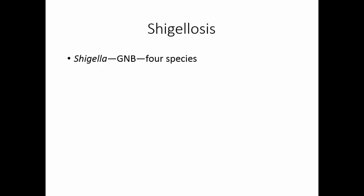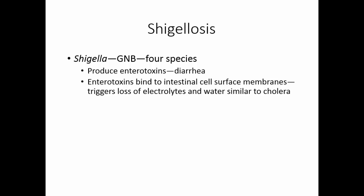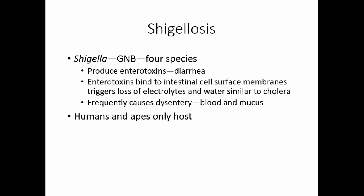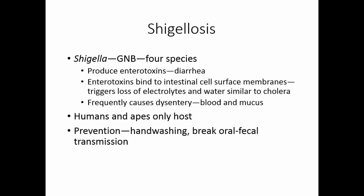Shigellosis is caused by Shigella, a gram-negative bacillus. There are four different species involved in bacterial gastritis. Shigella produces enterotoxins that cause diarrhea by binding to intestinal cell surface membranes, triggering loss of electrolytes and water from the cells — similar to the way cholera toxins act. Shigella frequently causes dysentery with blood and mucus in the stool. Humans and apes are the only hosts, and it is transmitted via the oral-fecal route. Prevention is good hand washing to break that transmission.